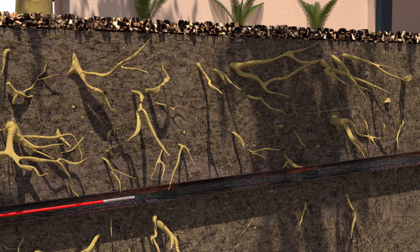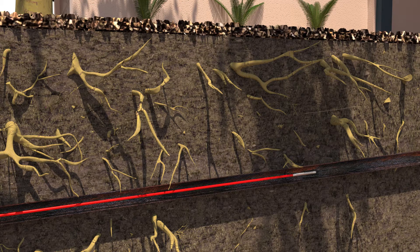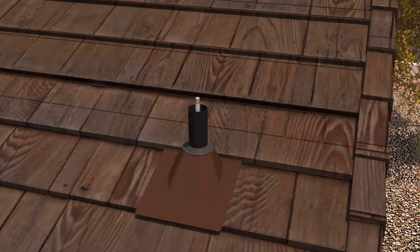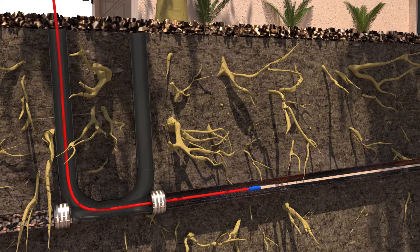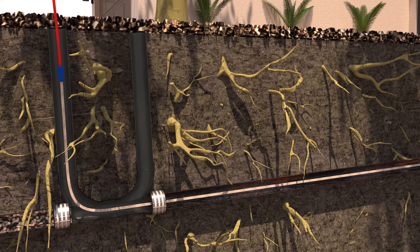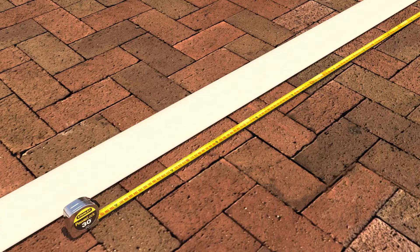We then re-video the pipe for assurance and to determine the required length of the liner. As the camera is retrieved, a pull line later used to pull the liner into the pipe is pulled back with it. The sewer is now ready to be lined.